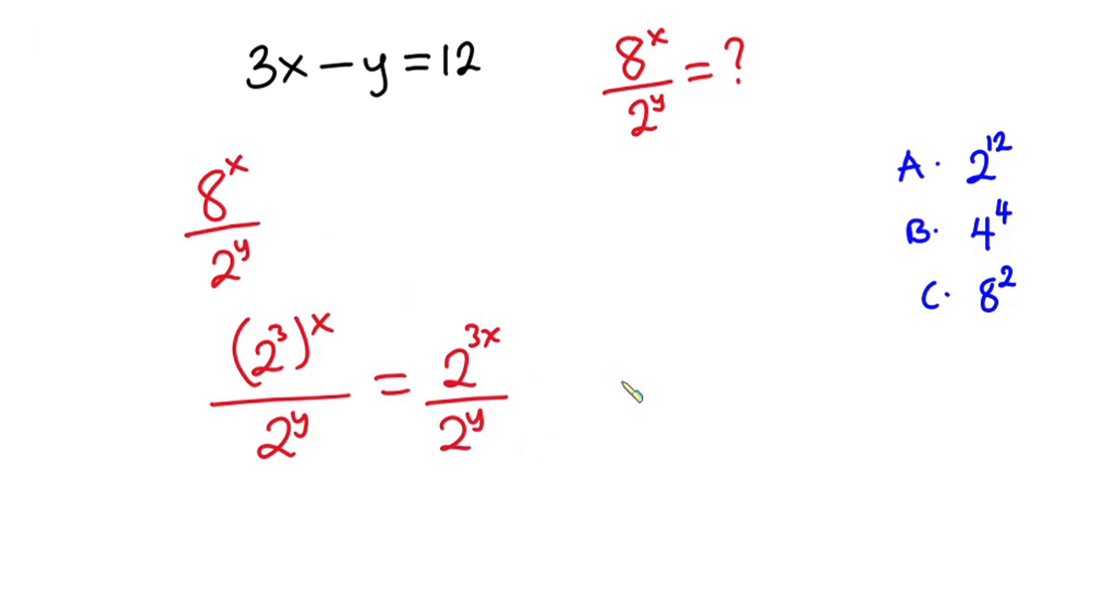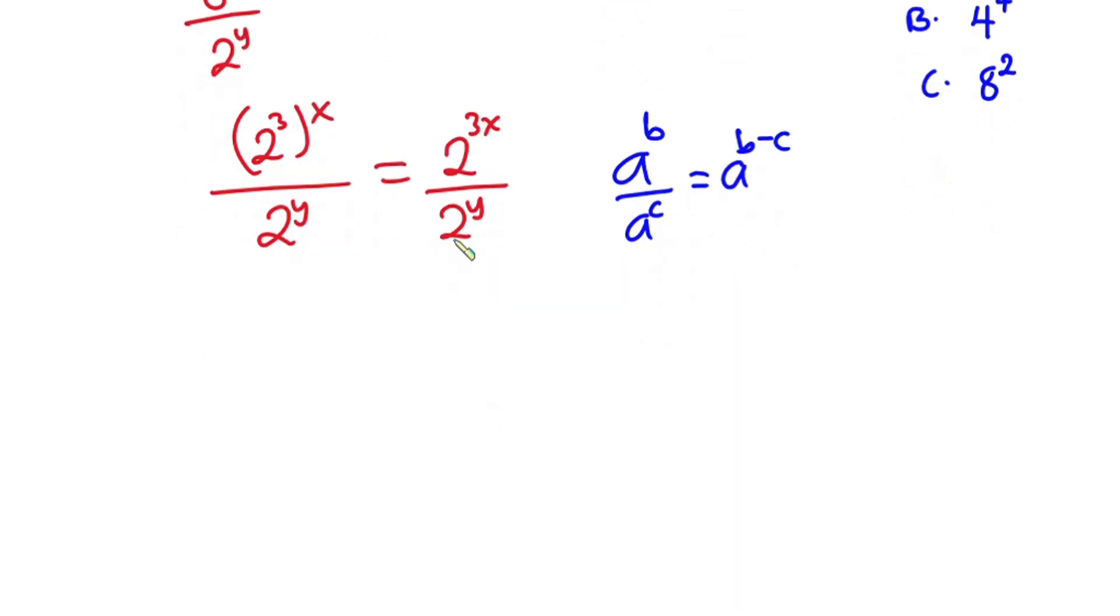Now from indices, if you have a to the power b over a to the power c, this is the same as a to the power b minus c. So I'm going to apply this condition over here. This 2 to the power 3x over 2 to the power y could also be written as 2 to the power 3x minus y.